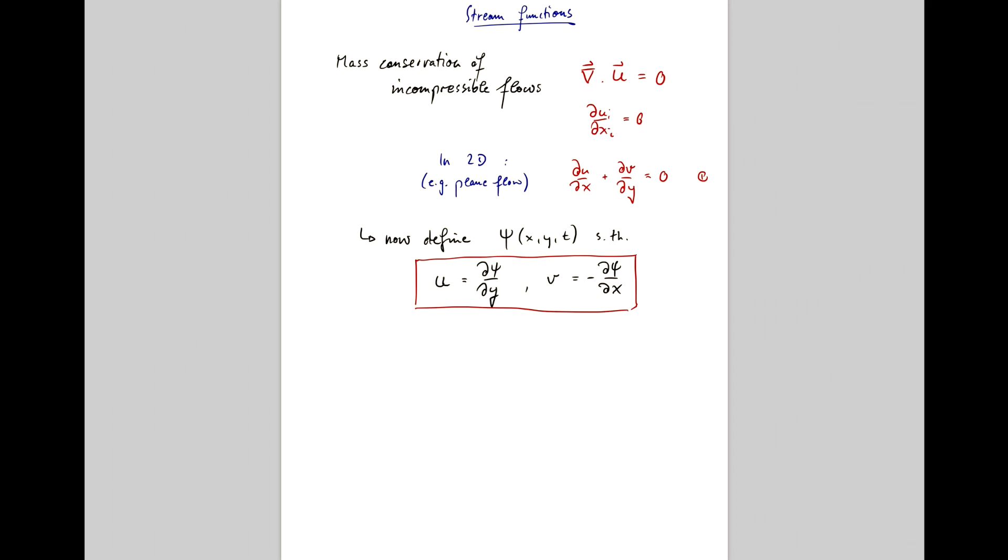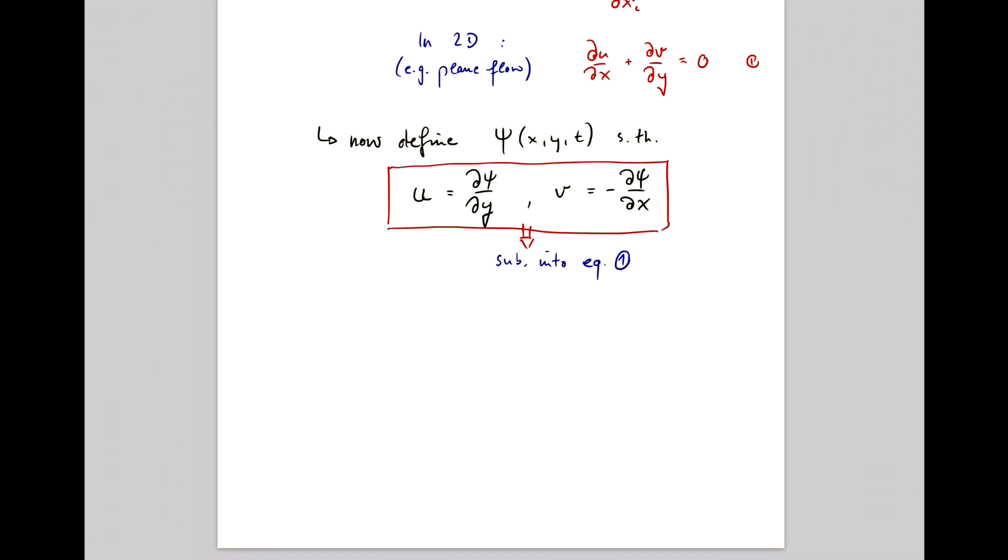Now, you may wonder, why would I do that? Well, it satisfies a particular property. If we sub this into equation one, you will find that d by dx of dps dy plus d by dy of minus dps dy dx is just d2, psi dx dy minus d2, psi dy dx, which is just zero.